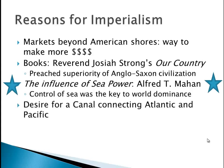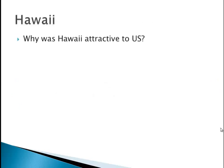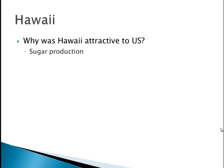Another reason that imperialism is happening is there is a desire for a canal connecting the Atlantic and the Pacific, and we will actually see this in Panama. Let's go over to Hawaii for a little bit. Hawaii was attractive to the U.S. because of sugar production.